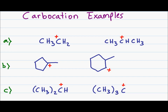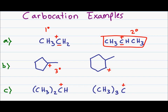For these examples, we look at two molecules and decide which has the more stable carbocation. In problem A, my first carbocation has one R group attached, making it primary. My second carbon has two R groups attached, making it secondary — that one is more stable. For problem B, I have a tertiary carbocation: the central carbon has one, two, three R groups attached. In the second structure, the carbon holding the charge only has two R groups. Comparing tertiary to secondary, the tertiary carbocation is more stable.